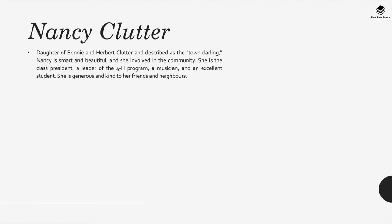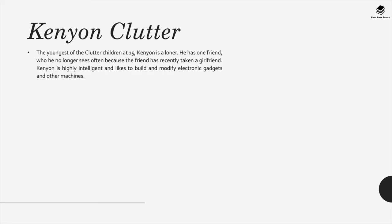Nancy Clutter, daughter of Bonnie and Herbert, is described as the town darling. Nancy is smart and beautiful, and she is involved in the community — she is the class president, a leader of the 4-H program, a musician, and an excellent student. She is generous and kind to her friends and neighbors. Kenyon Clutter, the youngest of the Clutter children at 15, is a loner. He has one friend he no longer sees often because the friend has recently taken a girlfriend. Kenyon is highly intelligent and likes to build and modify electronic gadgets and other machines.